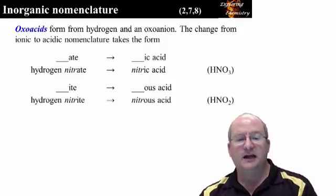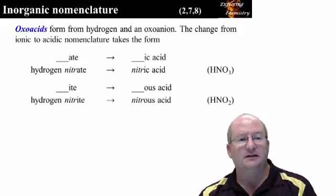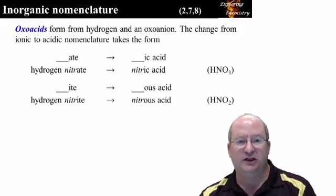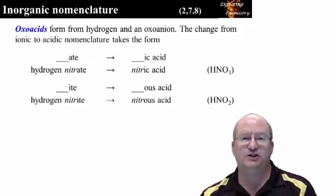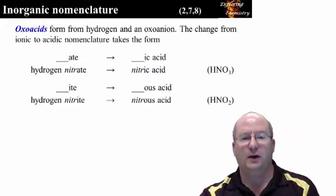This slide reminds you how to change from ionic to acidic nomenclature for oxoacids. Simply, anything ending in ATE changes to ic acid. Anything ending in ITE changes to OUS acid.